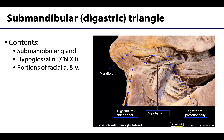The major contents of this triangle are going to be the submandibular gland, which you can see right here. We're going to spend a bit more time on the submandibular gland in subsequent videos within this session. What we're looking at here is the superficial part of the gland, which is the larger part of the submandibular gland. The deeper part is located in what we refer to as the sublingual space, which is located between the oral cavity proper and the mylohyoid muscle.